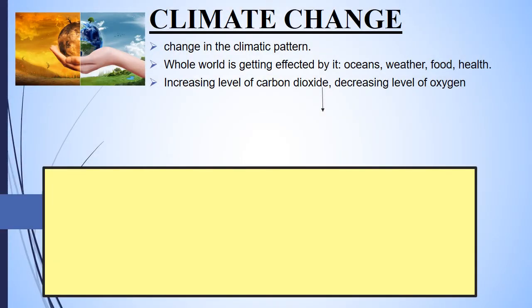Students, we are going to study climate change. Climate change is a change in the climatic patterns of a region or on a global scale. Our whole world is getting affected by it — whether there are oceans, weather, food, or health. The increasing level of carbon dioxide and decreasing level of oxygen in the air is causing this problem, and this is basically due to industrial revolution.